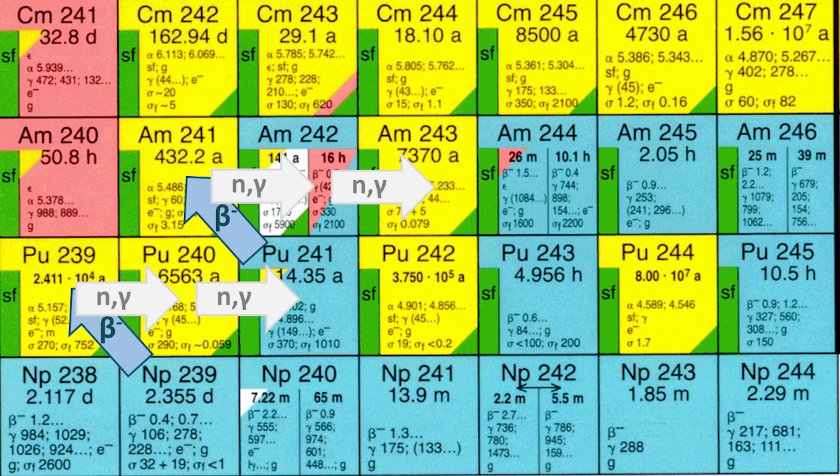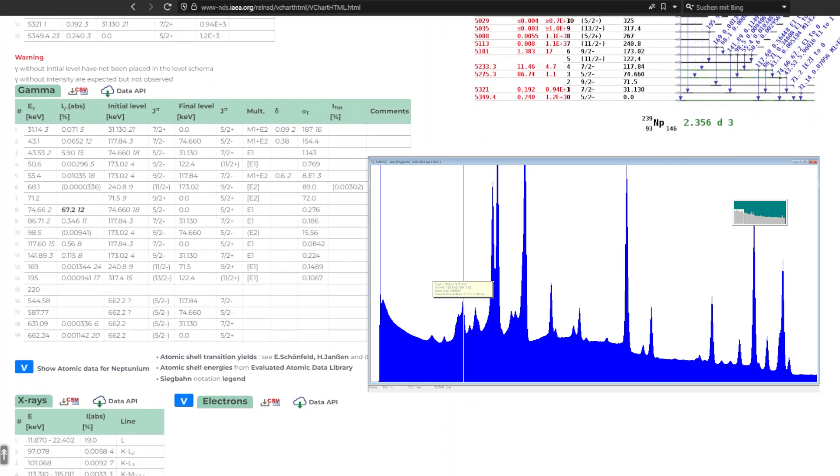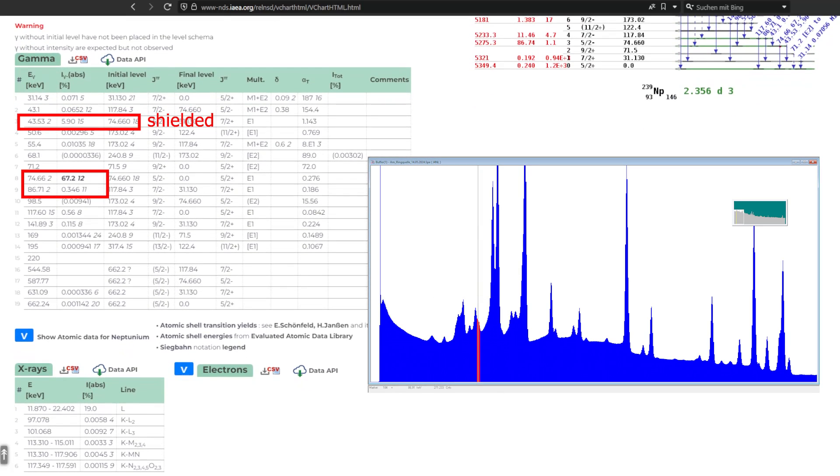And we definitely see something at 74 keV, 86 keV with 0.346%, and at 117 keV with an occurrence probability of 0.56%. So that fits. Very nice. Low traces, but it's in there.